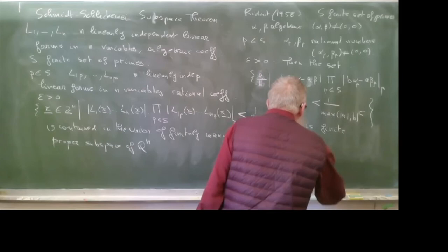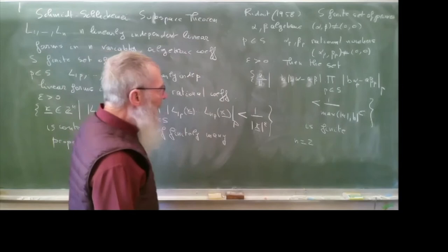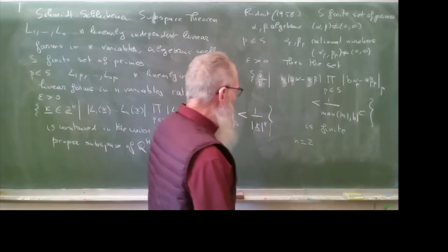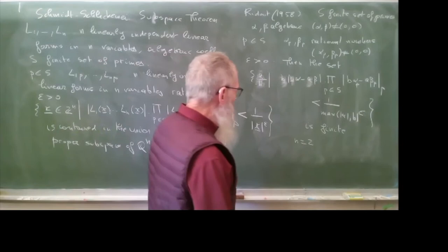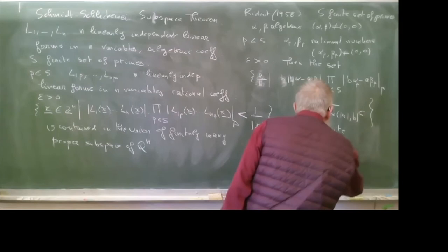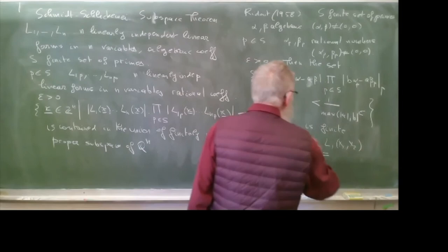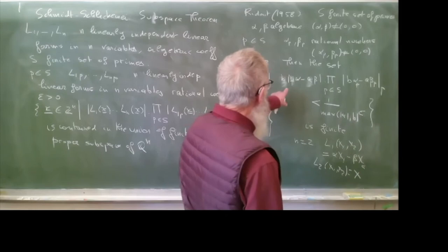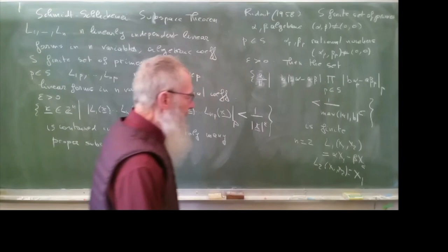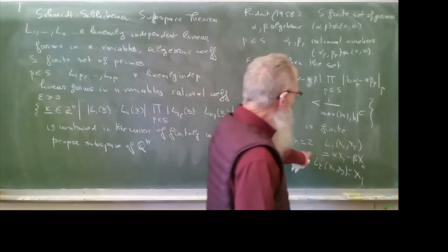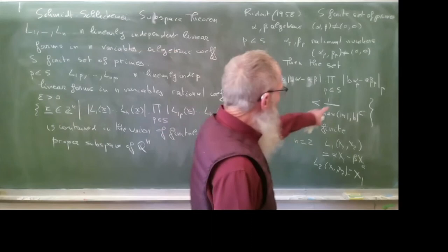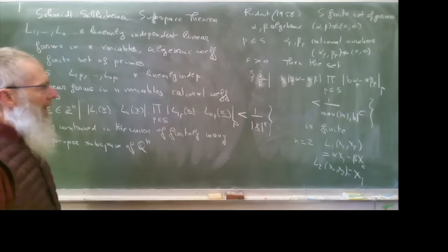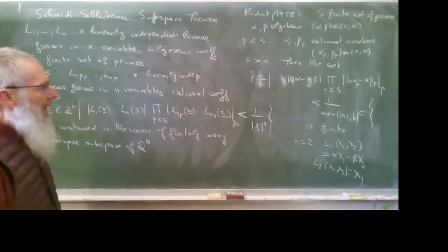Ridout's theorem is clearly the special case n=2 of the Schmidt-Schlickewei subspace theorem. For the forms L1, L2 we take L1(x1,x2) = alpha·x1 - beta·x2 and L2(x1,x2) = x1, exactly as we did when deducing Thue-Siegel-Roth. For the p-adic forms L1p, L2p, we take the forms corresponding to alpha_p and beta_p, and then we deduce Ridout's theorem from the Schmidt-Schlickewei subspace theorem.